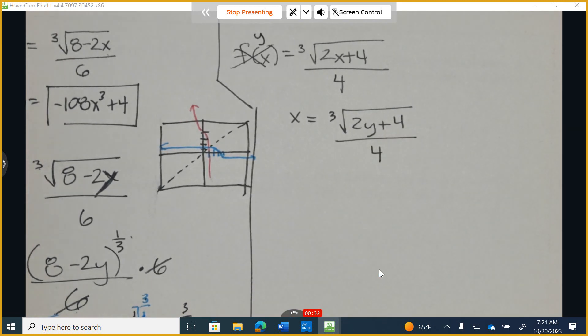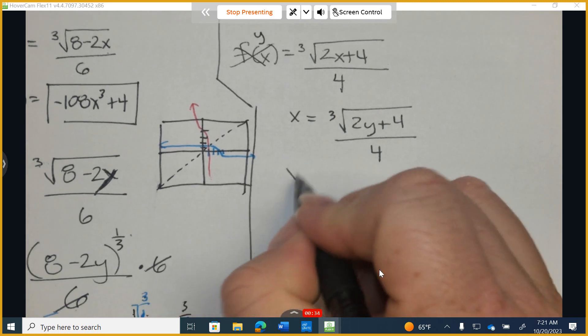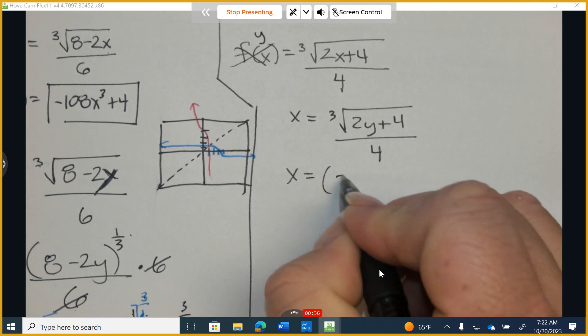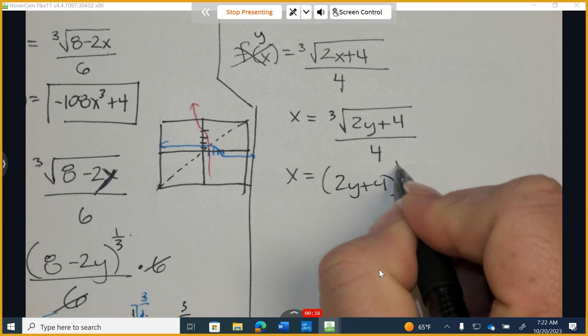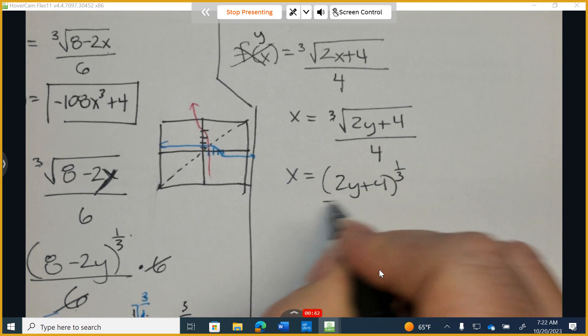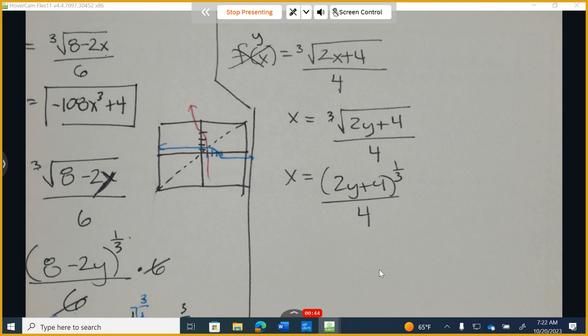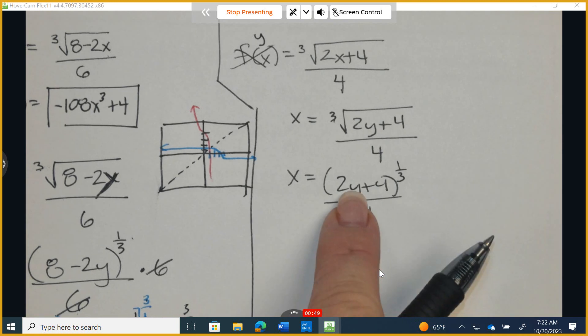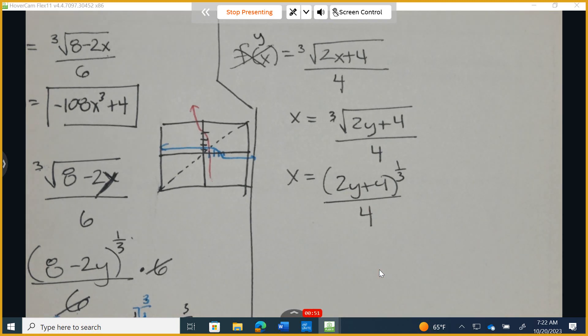My second step is going to be to isolate the y. So I'm going to rewrite this as 2y plus 4 to the 1 third. Whatever your mth root is, we write 1 over that. And now I'm going to use PEMDAS and I'm going to start from the bottom up. So I'm going to do adding and subtracting in order to isolate the y, then I'll go to multiplying, dividing, exponents, and parentheses.